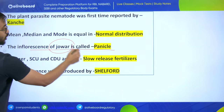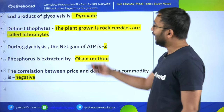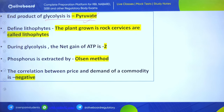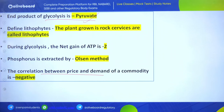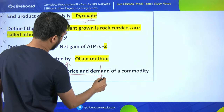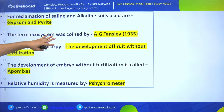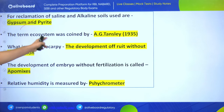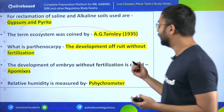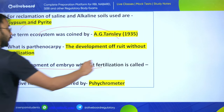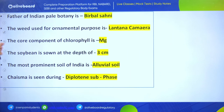Inflorescence of jowar is called panicle - a previous year question. Low tolerance was introduced by Shelford. The product of glycolysis is pyruvate. Correlation between price and demand of a commodity is negative - price increases, demand decreases; price decreases, demand increases. For reclamation of saline and alkaline soils, gypsum and pyrite are used. The word ecosystem was given by Tansley. Parthenocarpy is fruit development without fertilization. Apomixis is development of embryo without fertilization.